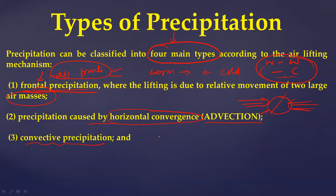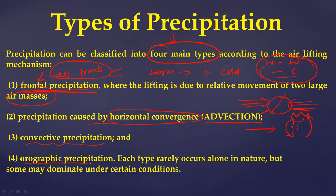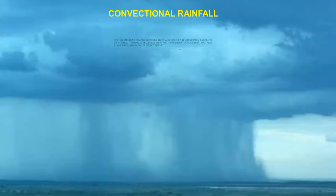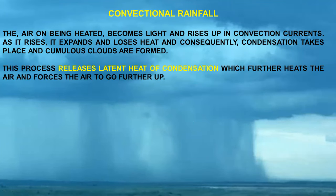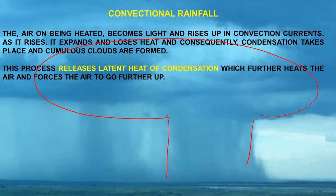Third is convective precipitation: hot air rises with moisture, forms clouds, rain happens, and cool air descends — this is convectional rainfall. It produces short-duration but heavy precipitation, typical in equatorial rainforests, the Amazon basin, Southeast Asia, equatorial doldrums, and the Congo basin. Fourth is orographic precipitation, where moisture-laden wind rises over mountains, causing cloud formation and rainfall on the windward side.